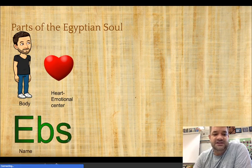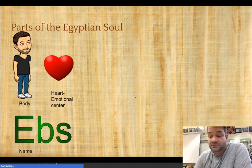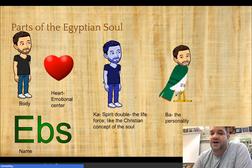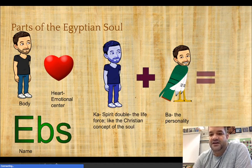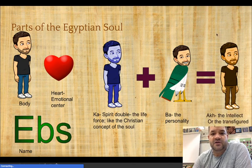Knowing someone's name was very important and gave you power over them, so a name was part of the soul. There's the ka, which is the spirit double or life force. There's the ba, which is bird-shaped with your head - it's your personality. When you combine the ka and the ba, you get the akh - the intelligence or transfigured soul. There are more parts, but these are the big ones.